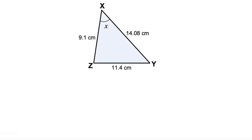Question 2 involves finding the missing angle. We are given the measurements of all three sides: X to Z is 9.1 cm, Z to Y is 11.4 cm, and Y to X is 14.08 cm. The first thing to do is label the sides A, B, or C.